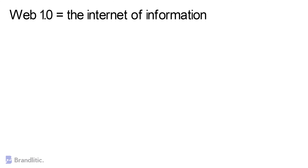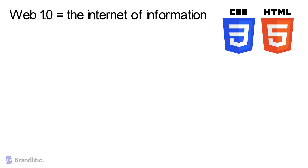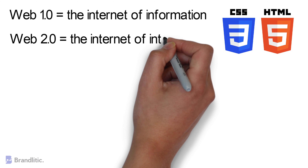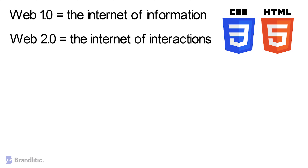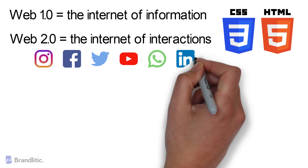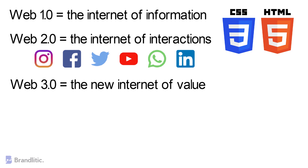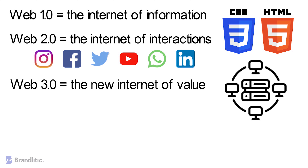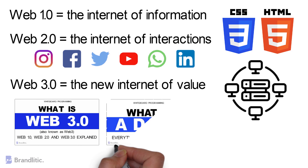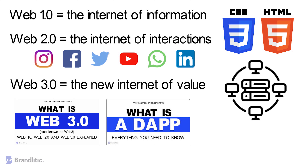Web 1.0 is the internet of information — the HTML/CSS website you cannot interact with. Web 2.0 is the internet of interactions, i.e., modern platforms like Facebook and Twitter that allow you to be connected end-to-end with others. And Web 3.0 is the new internet of value, where centralization of information is eliminated. If you want to learn more about what Web 3.0 is exactly, the link is given in the description below.